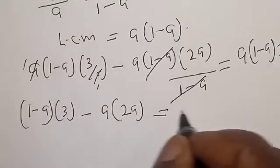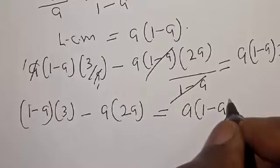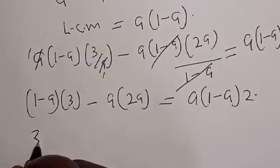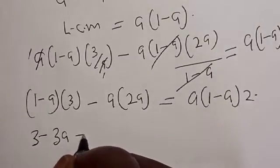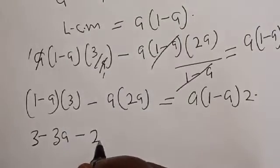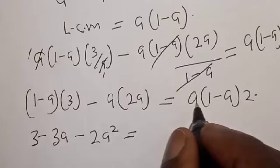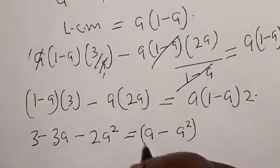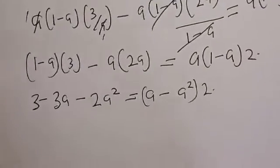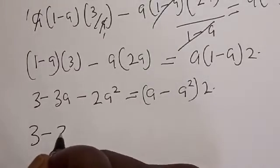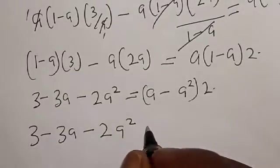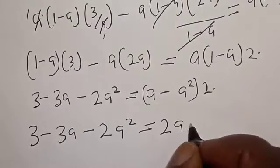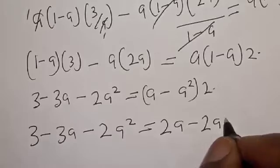We are left with 1 minus a multiplied by 3, minus a into 2a, is equal to a into 1 minus a multiplied by 2. Then let's open the bracket. We have 3 times 1 that is 3, minus 3a, then minus 2a squared, is equal to a times 1 minus a times a, that is a minus a squared, then multiply by 2: giving 2a minus 2a squared.